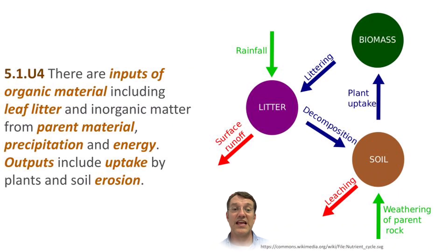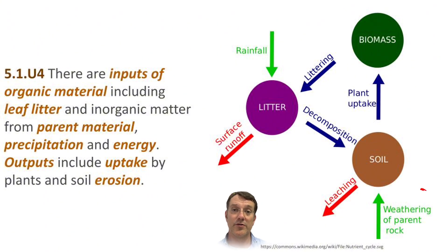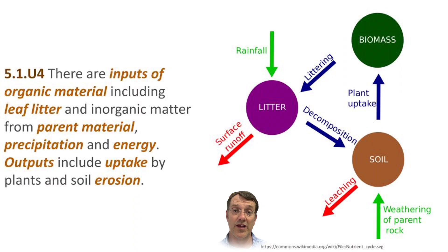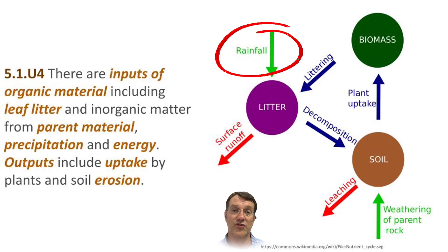This systems diagram shows different inputs of organic material, including leaf litter — all the leaves that fall onto the ground from plants in that area. You also get the parent material, the bedrock at the bottom of the soil profile, which is slowly eroded or weathered over millennia into smaller and smaller bits of rock contributing to mineral content. Precipitation — rain, snow, sleet — is also an input of water as it moves downward through the soil.